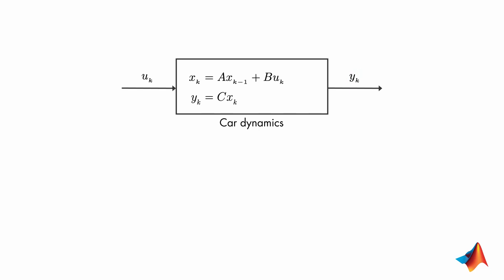We'll show this measurement noise with V, which is a random variable. Similarly, there is process noise, which is also random and can represent the effects of the wind or changes in the car's velocity.